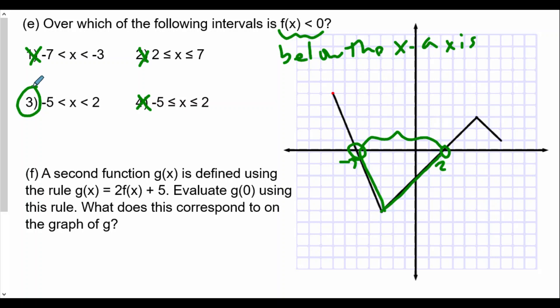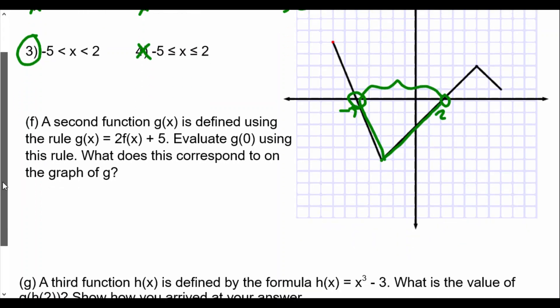So for question f, a second function g(x) is defined using the rule g(x) equals 2f(x) plus 5. Evaluate g(0) using this rule. What does it correspond to on the graph of g? In this case, we want to find g(0). Well, g(0), according to the rule, is 2 times f(0) plus 5. So we're going to take a look at f(0). Now f(0) is going to be, when x equals 0, that will be at negative 2.